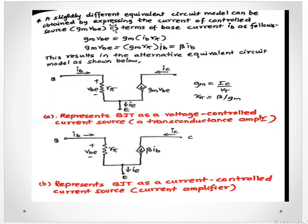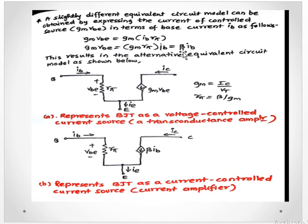A slightly different equivalent circuit model can be obtained by expressing the controlled source GM·VBE in terms of base current IB. Since VBE = IB·Rπ, substituting gives GM·Rπ·IB = β·IB. So in terms of base current the controlled source becomes β·IB. This results in an alternative equivalent circuit model.